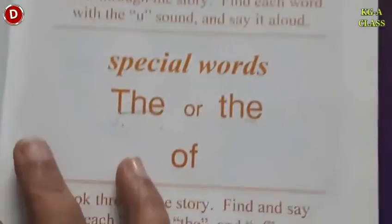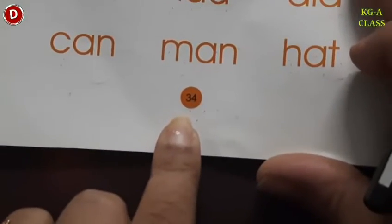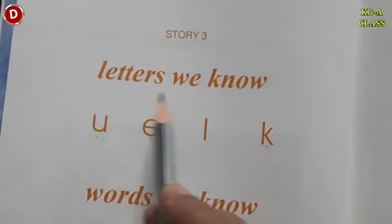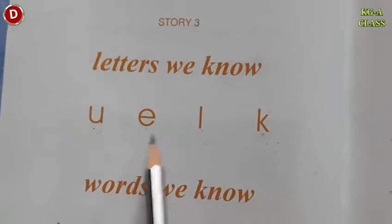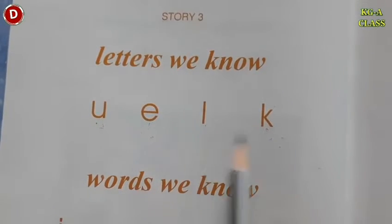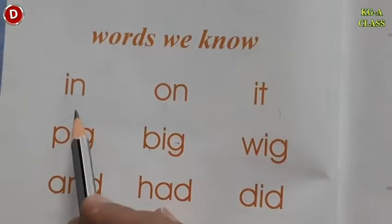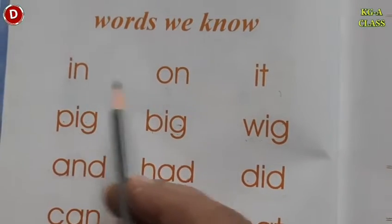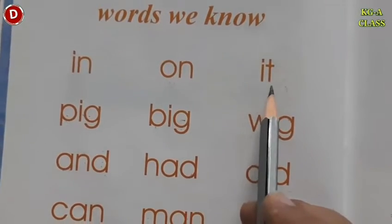Now children, turn the page. Come to page number 34. Story 3 — letters we know. This is U, E, L, and K. Words we know. Let's read: in, on, it.